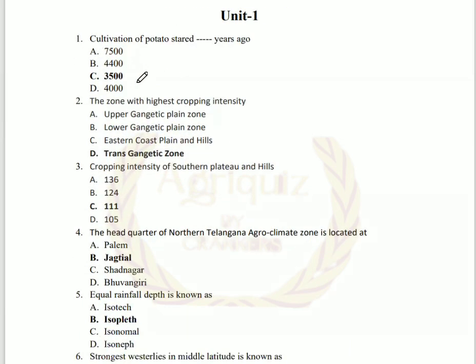First question: cultivation of potato started 3,500 years back. 7,500 years back, wheat and barley crop production had started. Whereas 4,400 years back, maize cultivation started. And 4,000 years back, rice cultivation was started.